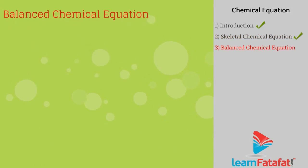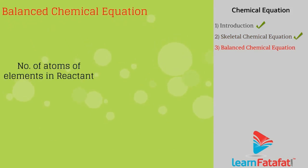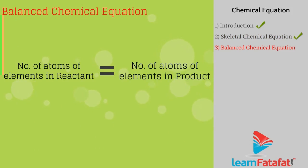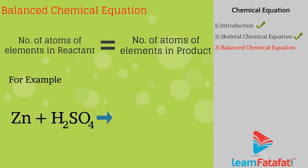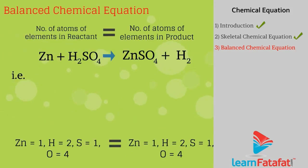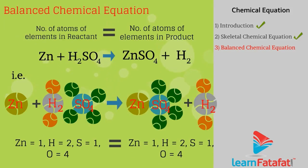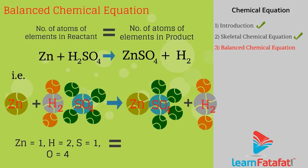A balanced chemical equation is one in which the number of atoms of each element on the reactant side is equal to the number of atoms of each element on the product side. For example: Zn + H2SO4 → ZnSO4 + H2. In this balanced equation, the number of atoms of each element on the LHS equals those on the RHS.